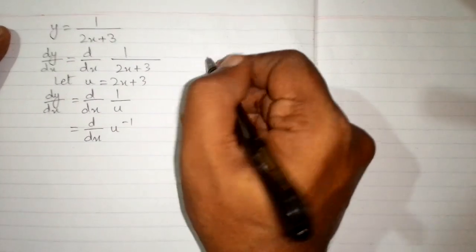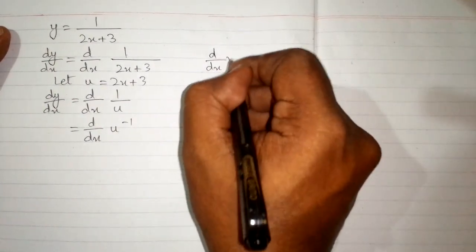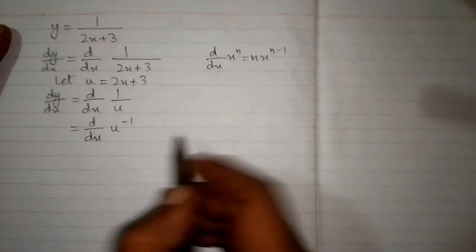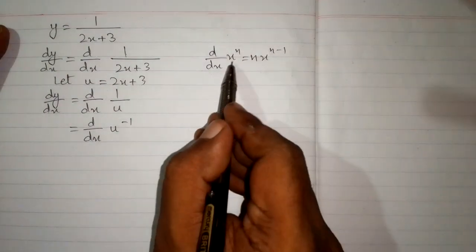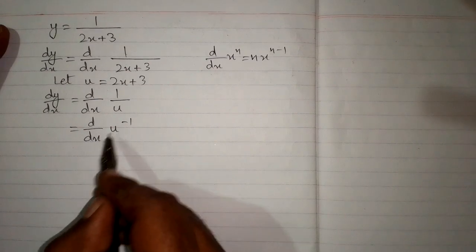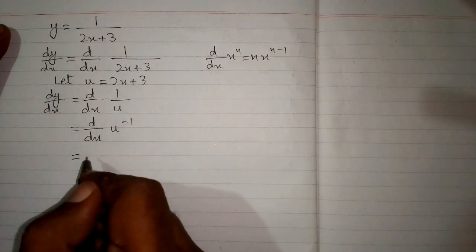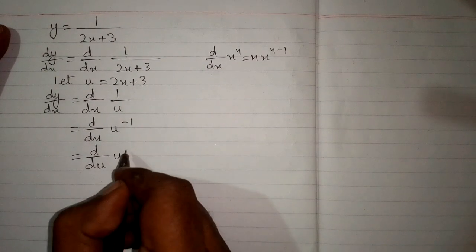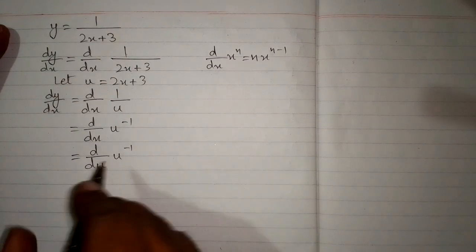Now we can apply the power rule of differentiation, which is d/dx of x to the power n is equal to n times x to the power n minus 1. But we cannot apply this formula directly here because the variables must be the same. But here we have u and x and they are different, so they must be the same in order to differentiate. So we will write du in place of dx so that we can differentiate u raised to the power minus 1.